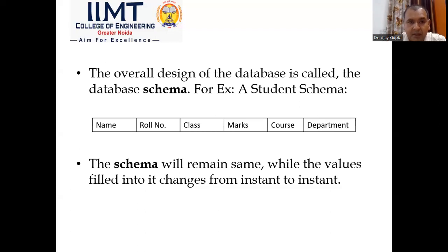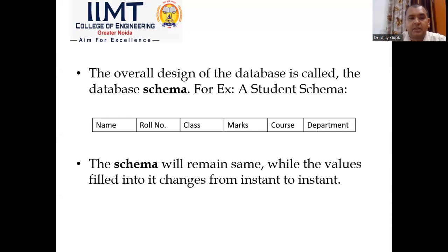What is a schema? The overall design of the database is called the database schema. For example, a student schema includes name, roll number, class, marks, course, and department. If we create our database as a table, the table headings — that is, the attribute names — are the schema of the table. Schema is basically the overall structure of the database. The schema will remain the same while the values filled into it change from instance to instance.